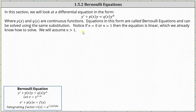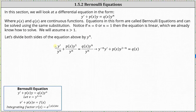For the first step, we will divide both sides of the equation by y to the power of n. Simplifying, we have y to the power of negative n times y prime plus p of x times y to the power of one minus n equals q of x.